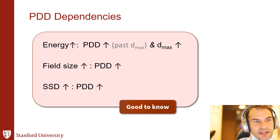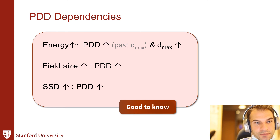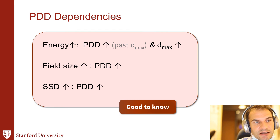To summarize: as you increase energy, the PDD at any given depth increases — for example, at 10 cm, 6 MV gives about 67% PDD while 15 MV gives about 75–76%. The depth of maximum dose also increases with energy because the electron range increases. Increasing field size also causes PDD to increase. And increasing SSD also causes PDD to increase.